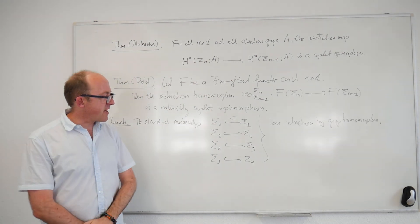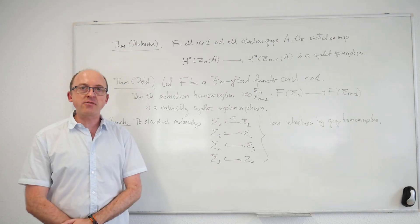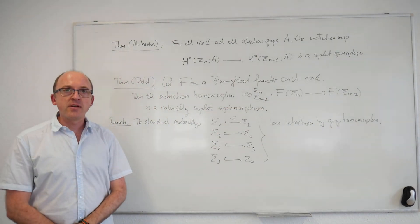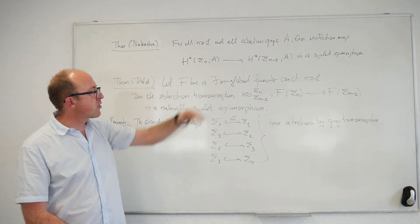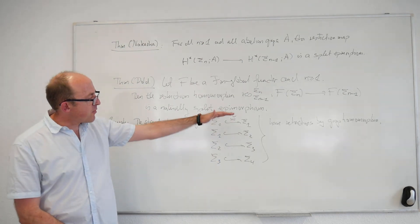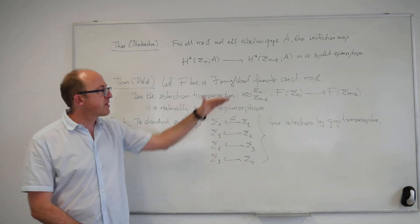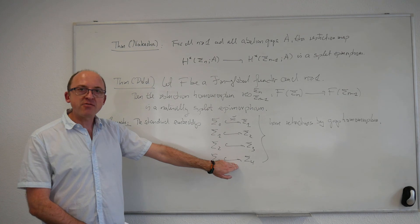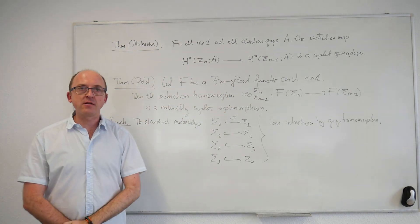In the general argument you cannot proceed like this, because as soon as N is 5 or larger the inclusion of σ_{N−1} into σ_N does not have a retraction by a group homomorphism. So you cannot split this just by arguing with inflation. Instead, Dold's argument makes essential use of transfers — it really uses the full global structure that is available. Another word of warning: in the small cases, the splitting you get from choosing these retractions would be different from the splittings produced in general, except at the very small cases N=1 and N=2.